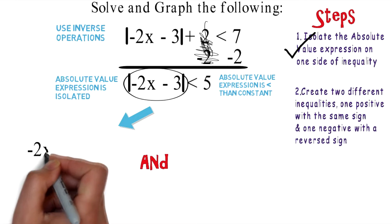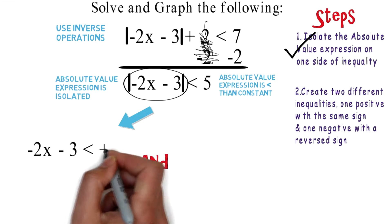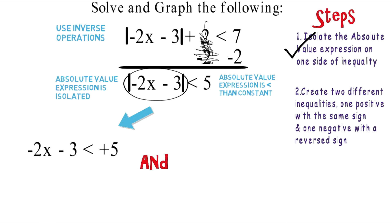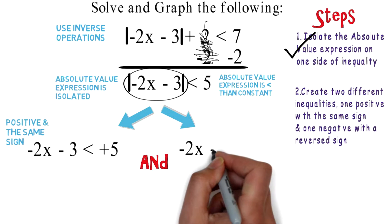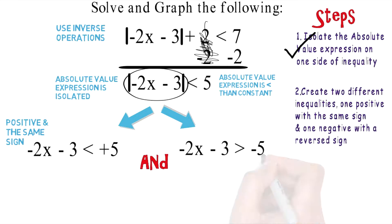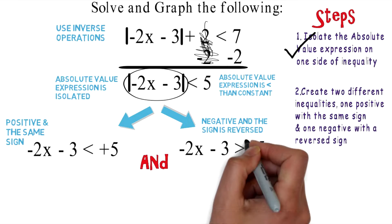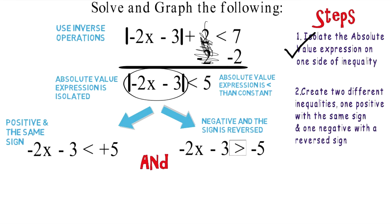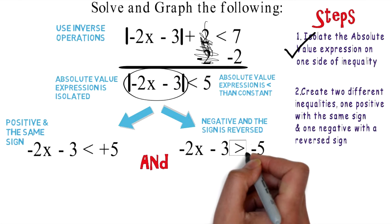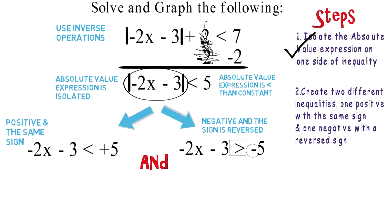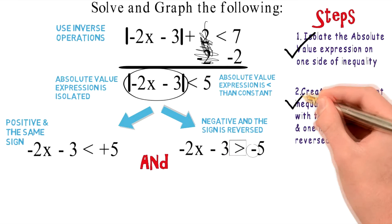Here you have negative two X minus three is less than positive five — that's positive and the same sign. And on the other one, you have negative two X minus three is greater than negative five — that is negative and the sign is reversed. Take a look at the sign here — reversed, and the sign is negative.